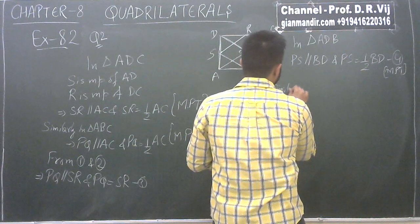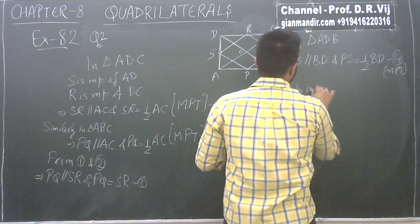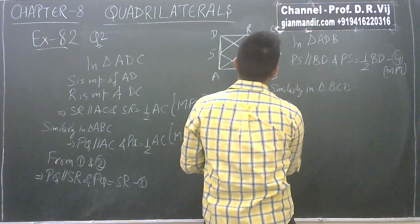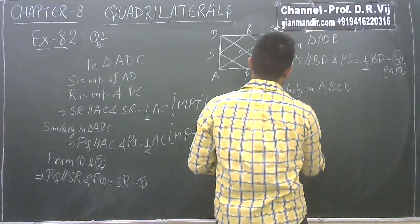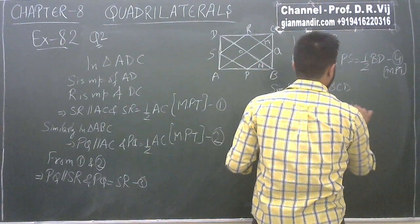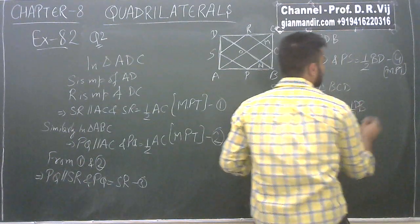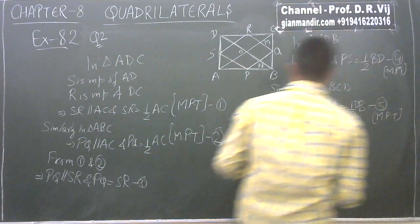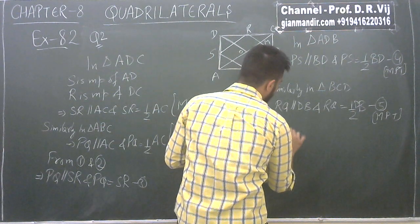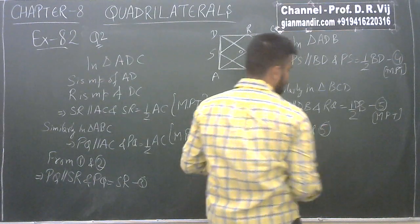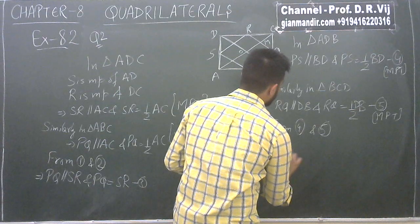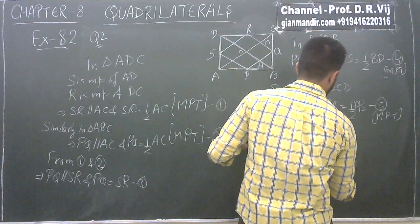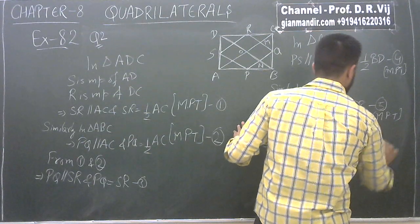Similarly, in triangle BCD, RQ is parallel to DB and RQ is equal to half of DB, by the midpoint theorem. We will take this as statement 5. From statements 4 and 5, we can say that PS is parallel to QR and PS is equal to RQ. We will take this as statement 6.